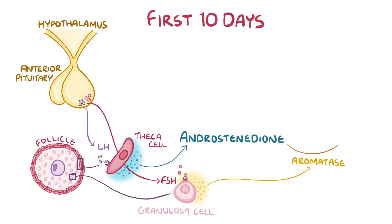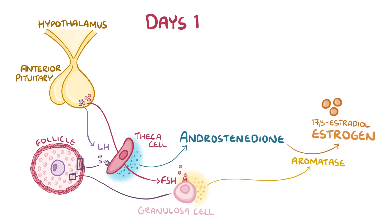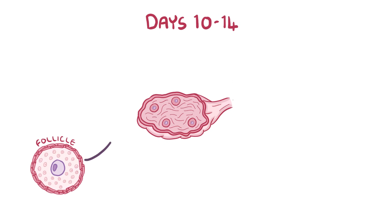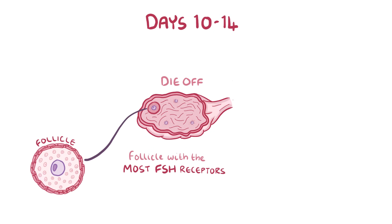Aromatase converts androstenedione from the theca cells into 17-beta-estradiol, a member of the estrogen family. During days 10 through 14, granulosa cells also begin to develop luteinizing hormone receptors in addition to the FSH receptors they already have. As the follicles grow and estrogen is released into the bloodstream, increased estrogen levels act as a negative feedback signal, telling the pituitary to secrete less FSH. As a result, some developing follicles stop growing and die off. The follicle with the most FSH receptors, however, continues to grow, becoming the dominant follicle that will eventually undergo ovulation.